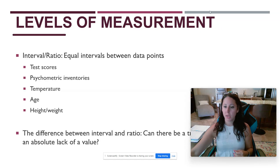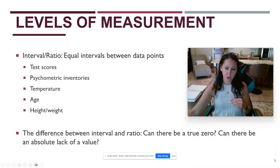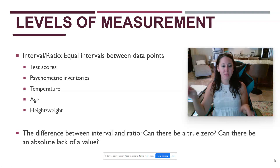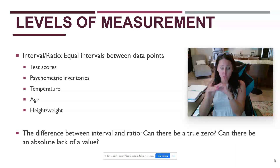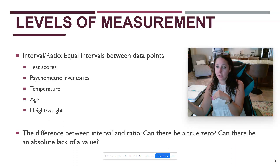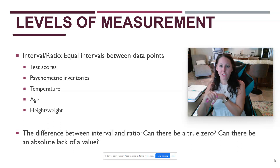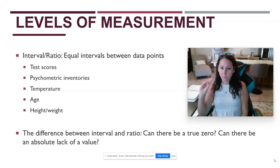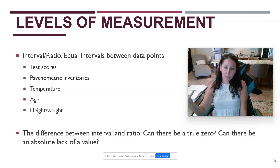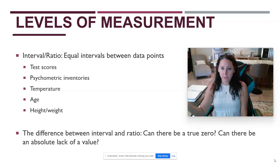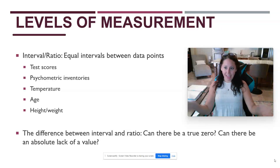The difference between interval and ratio is whether there can be a true zero — an absolute lack of a value. An interval does not have a true zero, whereas a ratio does. For example, you can actually get a zero on a quiz if you skip it or don't take it — you have zero points, absolute zero. That's ratio. Similarly, if you ask someone how many children they have, the answer can be zero — a total and complete lack of children. That's also ratio.